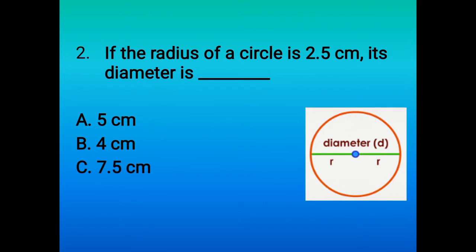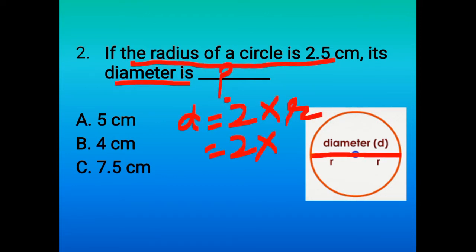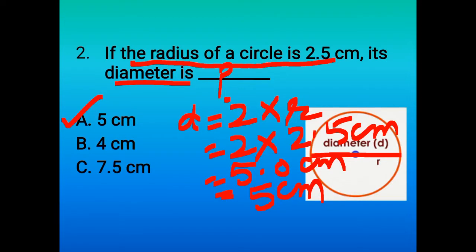Second question: if the radius of a circle is 2.5 centimeters, its diameter is what? Now children, see that this distance is known as the diameter. That is the line segment joining any two points on the boundary of a circle and passing through the center. Now this diameter is twice the radius, so here we are going to multiply 2 by 2.5 centimeters. After multiplication we get 5.0 centimeters, so this is 5 centimeters. Option A is the correct answer.